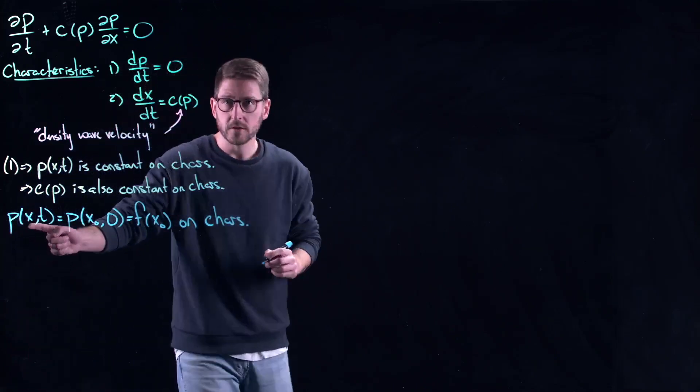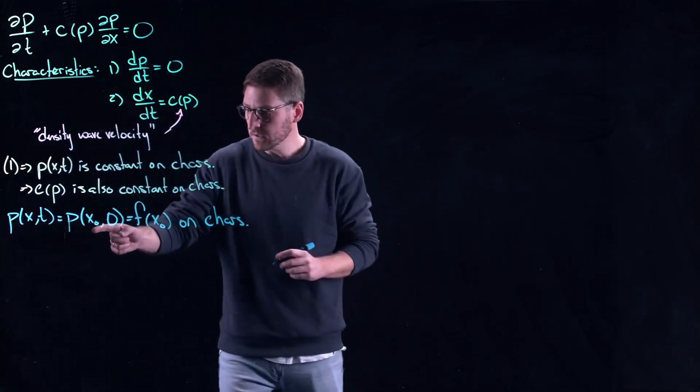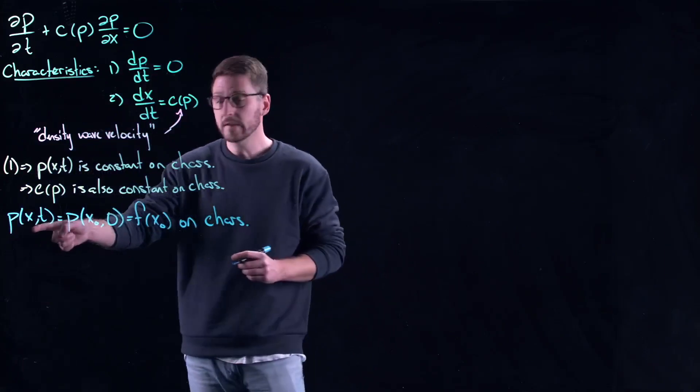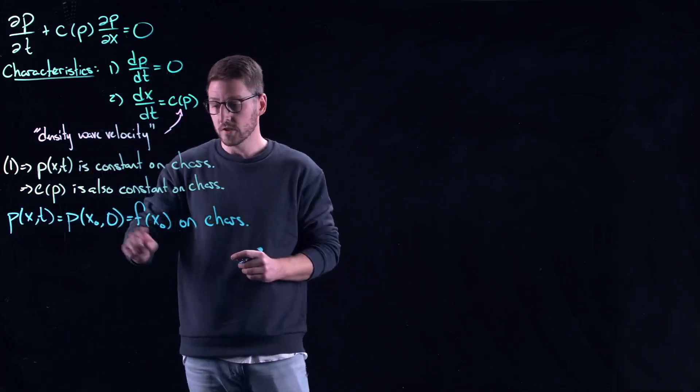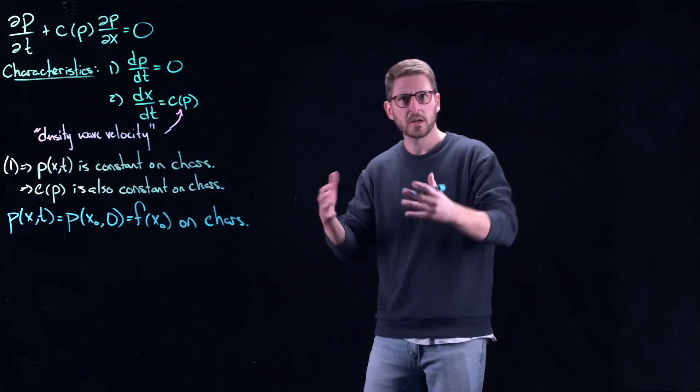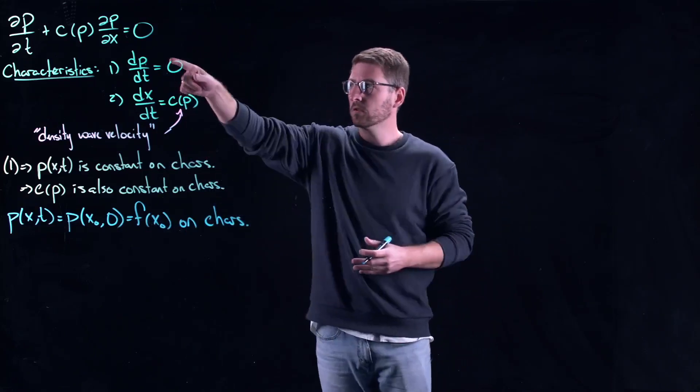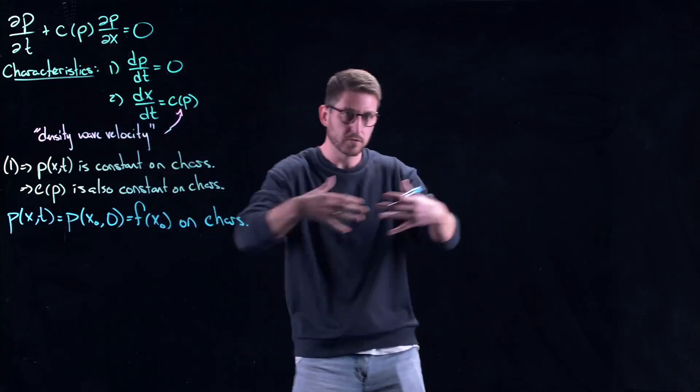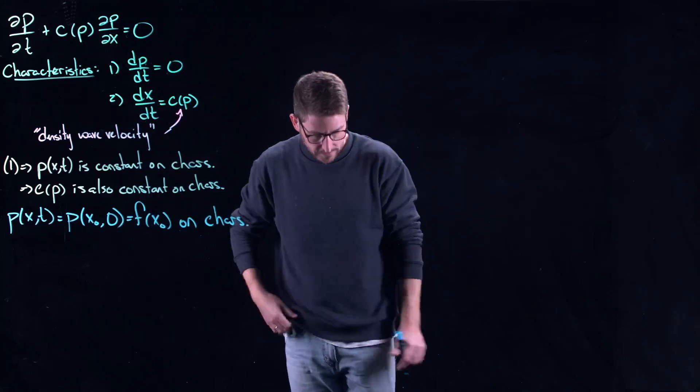x here would have to be a function of t, but essentially this tells you that your solution is just dictated by the initial condition. We've seen this a bunch of times. If c was constant, everything would just be transported at the constant speed c.